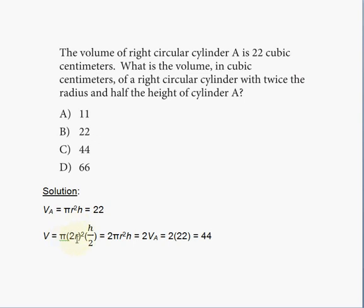So twice the radius means 2 times r will be the radius for this other cylinder. And the height is reduced by one half. Because it says half the height of cylinder A. So that means the h will be divided by 2. So I replace the h in the formula with h over 2.